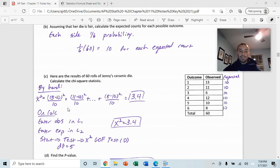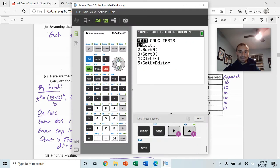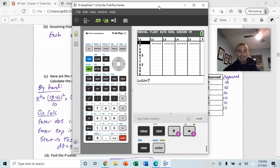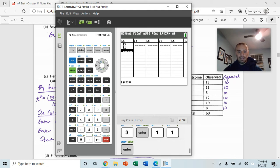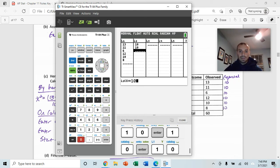You can also do this on the calculator, which I'm going to show you. You're going to enter your observed into L1, so these values into L1. You're expected into L2. So, let's go ahead and do that. Stat Edit, and in L1, I'm going to enter my observed. 13, 11, 6, 12, 10, and 8. In L2, I'll enter my expected.